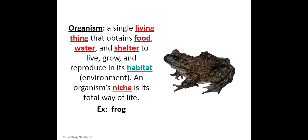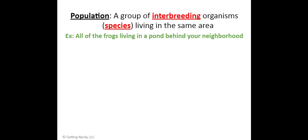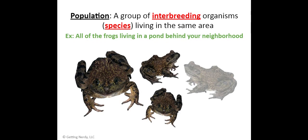The next level of organization is a population. A population is a group of interbreeding organisms of the same species living in the same area. For example, all of the frogs living in a pond behind your neighborhood are all the same species — this frog is the same as that frog. They all live in the same area and can breed with each other. That is one population of frogs. A different species would be a different population.